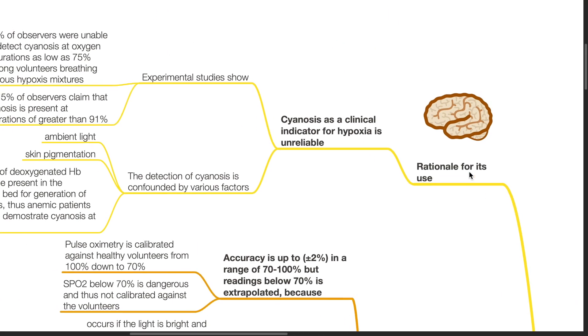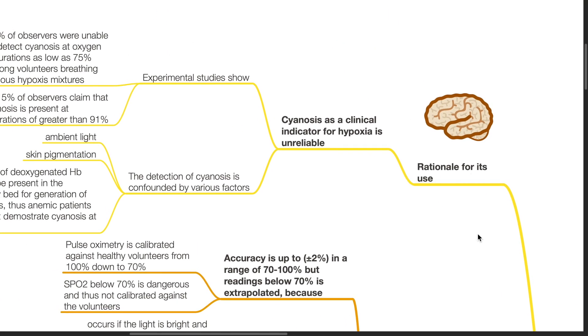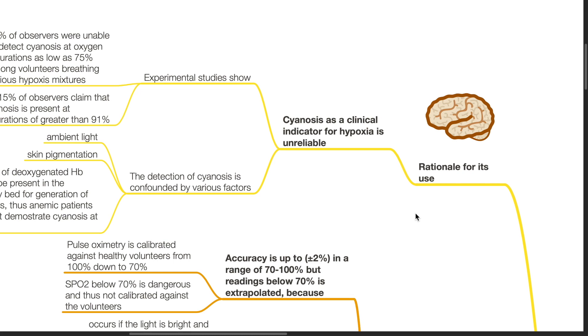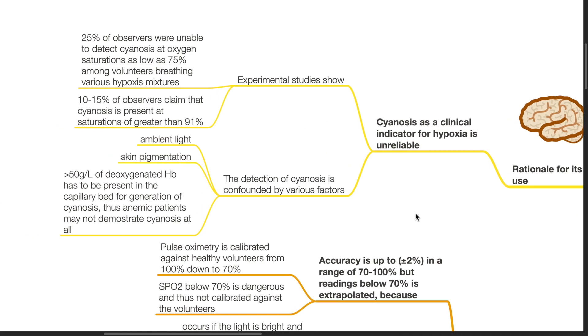The rationale for the use of pulse oximetry. Cyanosis as a clinical indicator for hypoxia is unreliable. Experimental studies show that 25% of observers were unable to detect cyanosis at oxygen saturation as low as 75% among volunteers breathing various hypoxic mixtures.